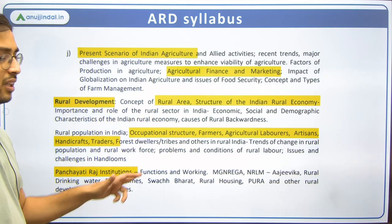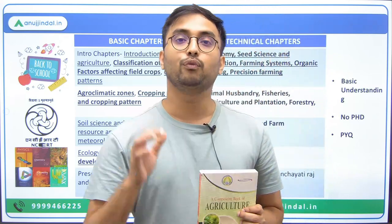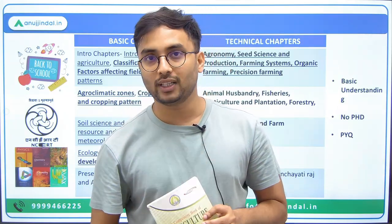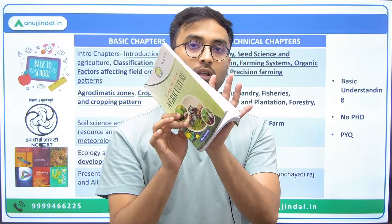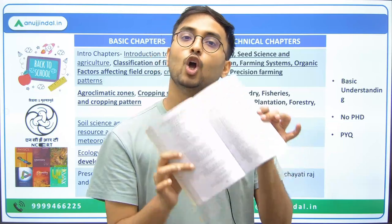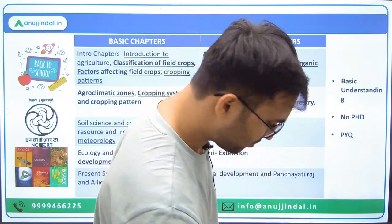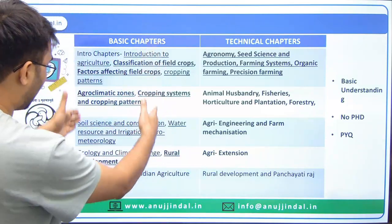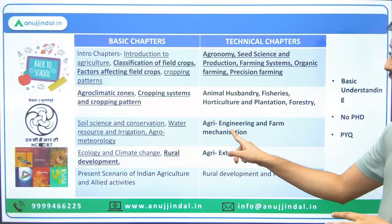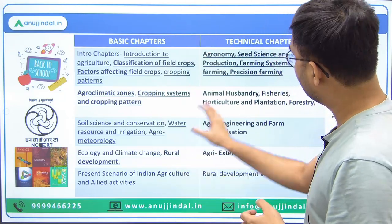The last topic in the syllabus is Panchayati Raj institutions. The reason we discussed the full syllabus is that until and unless you have a clear picture of all the topics and chapters under agriculture and rural development for the NABARD exam, you won't understand how to read a book. We've now divided these into basic chapters and technical chapters from the ARD syllabus.